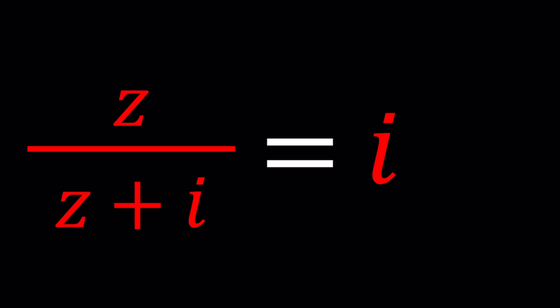So we have Z divided by Z plus I equals I. Can we find a number such that when it's divided by the same number plus I, then we get I? Let's find out.